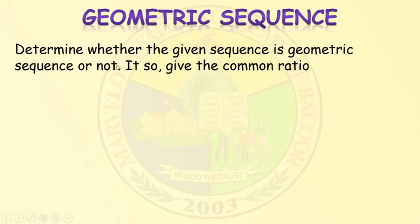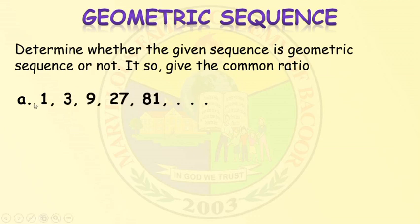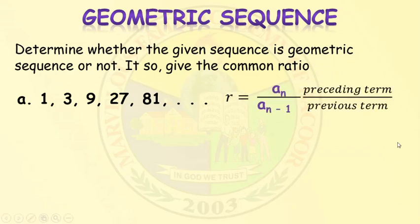Let's determine whether the given sequence is a geometric sequence or not, and if so, give the common ratio. For Example A, we have the sequence: 1, 3, 9, 27, and 81. The first thing we need to do is find the value of the common ratio using the formula r equals a sub n over a sub n minus 1, or the preceding term over the previous term.